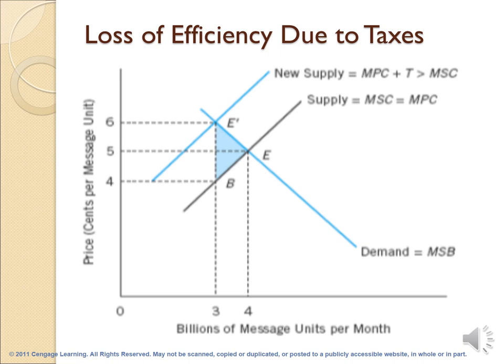When we have taxes on this good, the supply curve will shift inward to a new supply, where marginal social cost is not equal to the marginal private cost. The marginal private cost will increase due to the taxes, so the price will increase to 6 cents per message and the quantity will reduce to 3 billion units of messages.